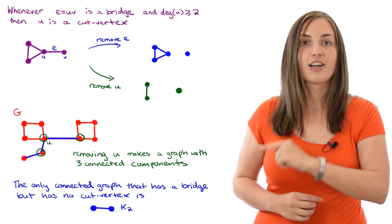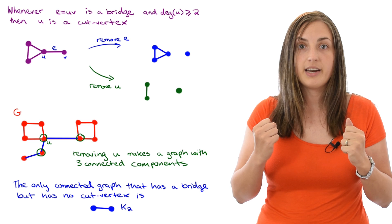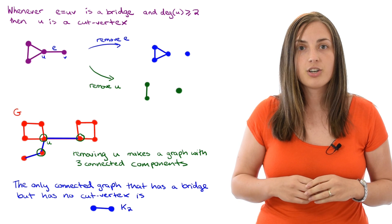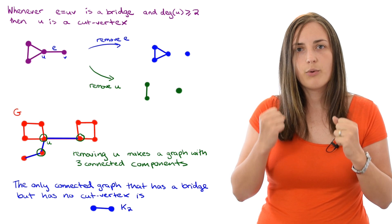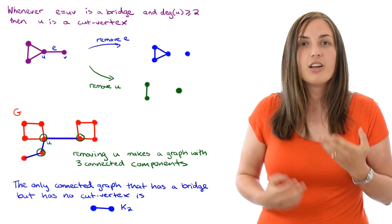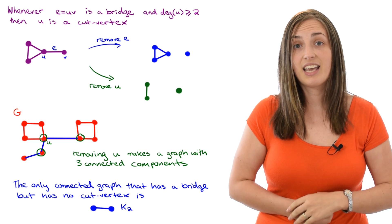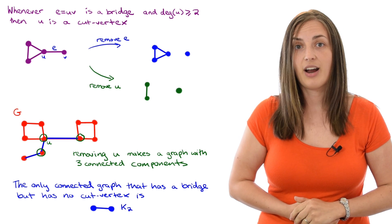this graph. The complete graph on two vertices. It's just a single edge. So removing it will create two components, so it's a bridge. But if you were to remove only one of those vertices, you're left with a connected graph of one vertex. So there is no cut vertex there, even though there is a bridge. That's the unique case where this happens in connected graphs.